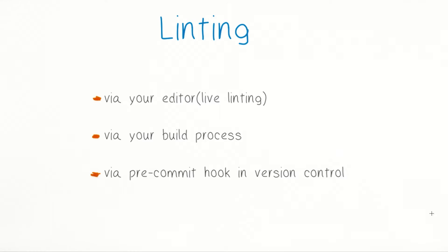Linting is a way to automatically check your JavaScript code for errors, and it can be done at various stages during development: via your editor, your build process, or your pre-commit hook in version control.